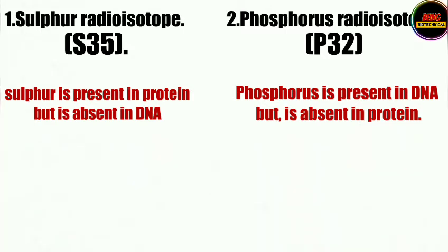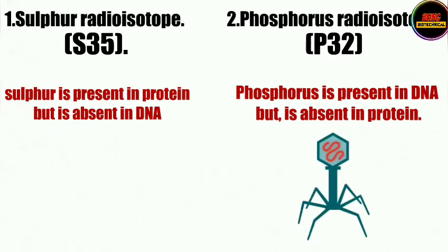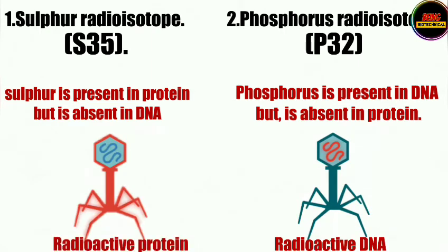Hershey and Chase grew some viruses in a medium that contained radioactive phosphorus, and the viruses grown in this medium contained radioactive DNA. Similarly, they grew some viruses in a medium that contained radioactive sulfur, and those viruses grown in that medium contained radioactive protein.